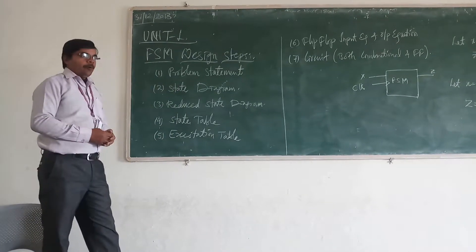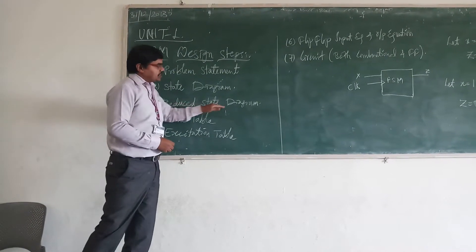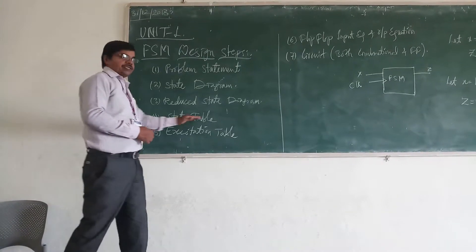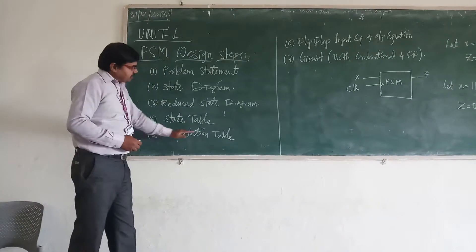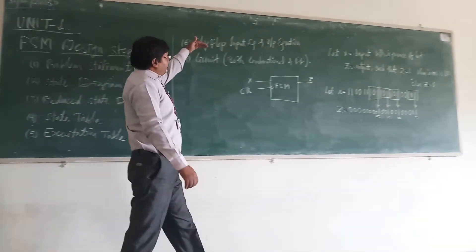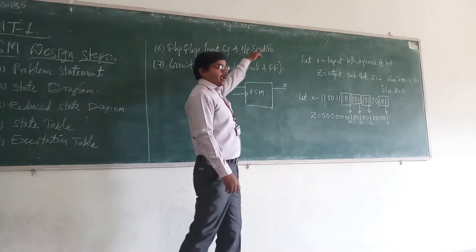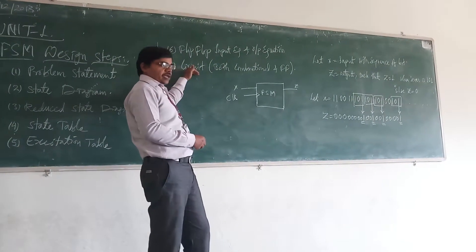From state diagram, we go for reduced state diagram. Then we go for state table, then excitation table, then flip-flop input equation and output equation, and finally we go for circuit.